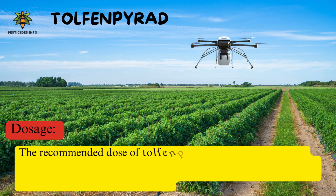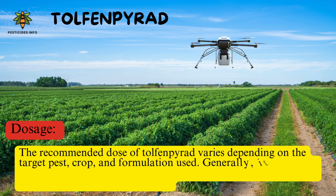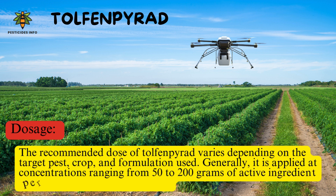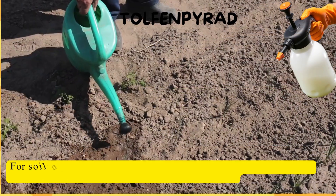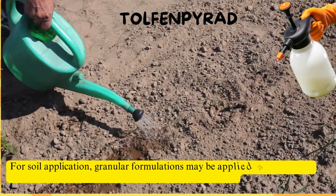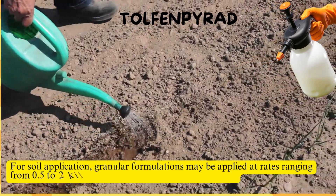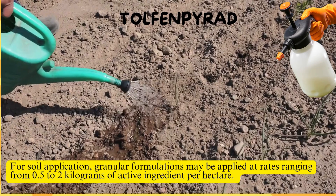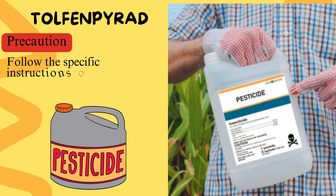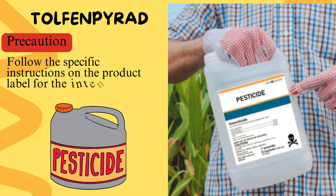Dose. The recommended dose of Tolfanpirad varies depending on the target pest, crop, and formulation used. Generally, it is applied at concentrations ranging from 50 to 200 grams of active ingredient per hectare for foliar applications. For soil application, granular formulations may be applied at rates ranging from 0.5 to 2 kilograms of active ingredient per hectare. Specific application instructions should be followed according to the manufacturer's recommendations and local agricultural guidelines.